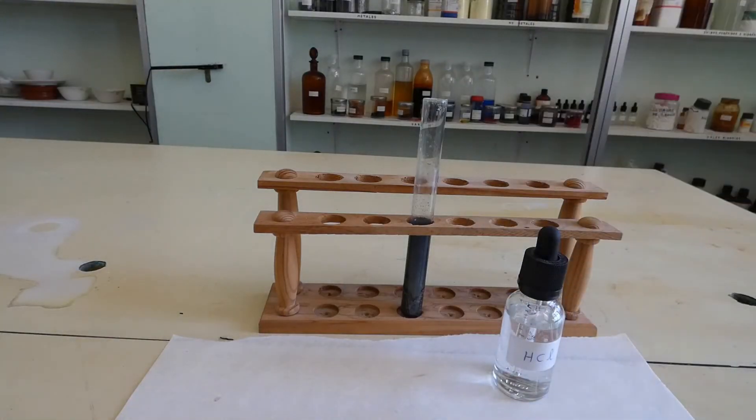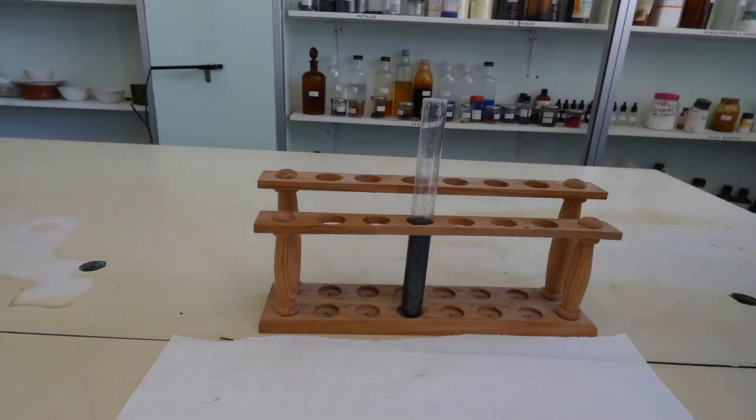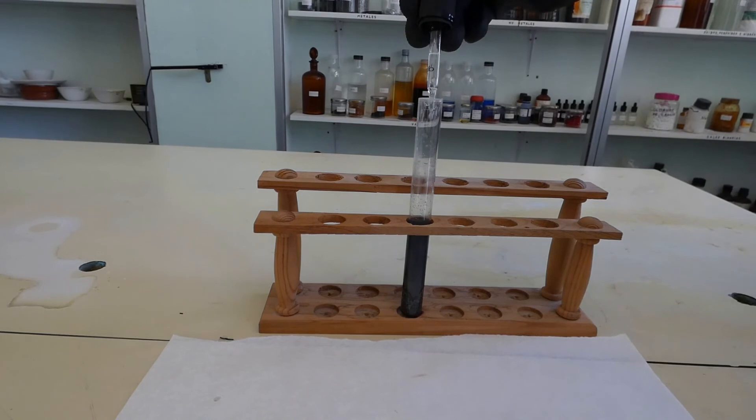Add hydrogen chloride solution. This is the reaction: iron sulfide plus hydrogen chloride produces hydrogen sulfide plus iron(II) chloride. The white precipitate that is seen is iron(II) chloride, and the smelly gas that is perceived is hydrogen sulfide.